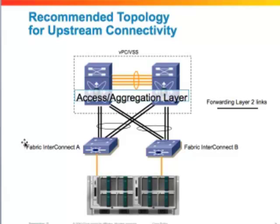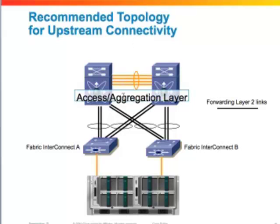For best practices on upstream connectivity: if you have a VPC or VSS upstream, it is highly recommended to port channel all links going into that layer — the fabric interconnects are not VPC peers themselves, but you can port channel into a VPC port channel. If you do not have VPC or VSS upstream, we still recommend port channeling any available links where applicable. In end host mode, even without port channels no links will be blocking, but port channels are recommended to minimize path changes when links fail. Turn on port fast network type edge and BPDU guard and filter for all links connecting to the UCS domain.